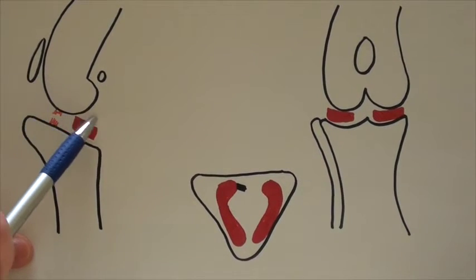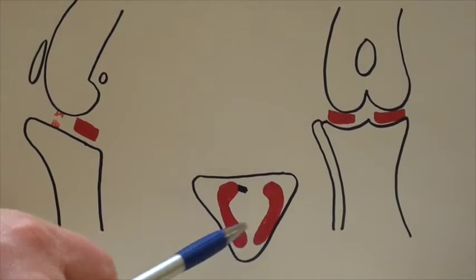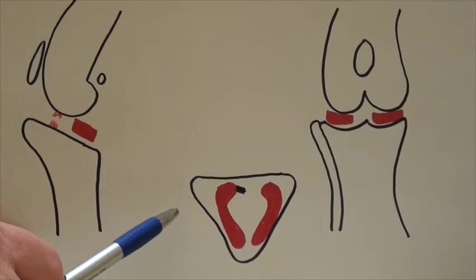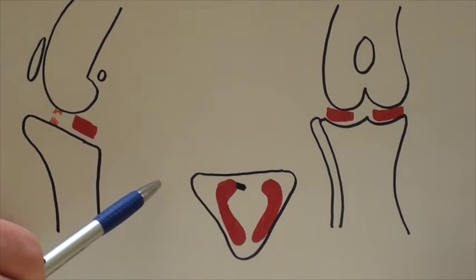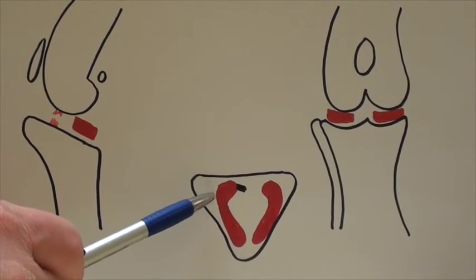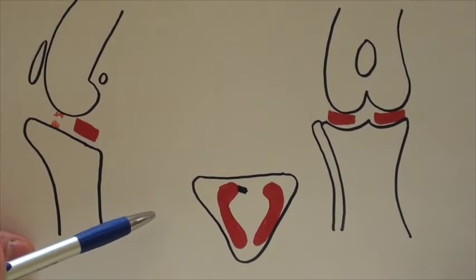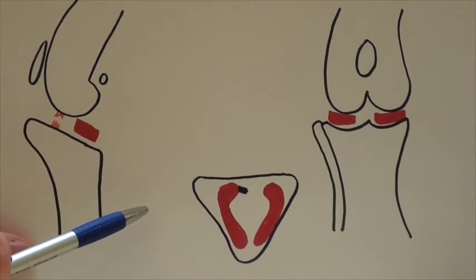So when the knee is unstable and the femur slides backwards, the outer meniscus moves with it. Inner meniscus, however, is attached to the tibia with a ligament. So as the femur slides backwards, it comes over this back portion like a steamroller and many times will tear the back portion of the meniscus.